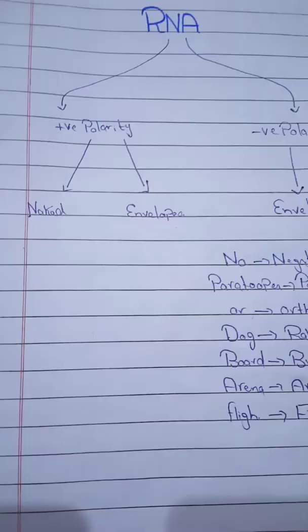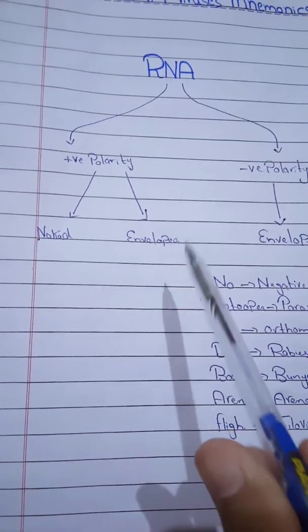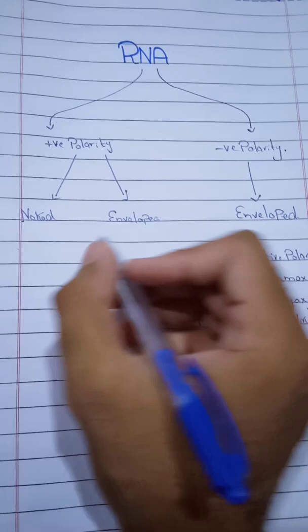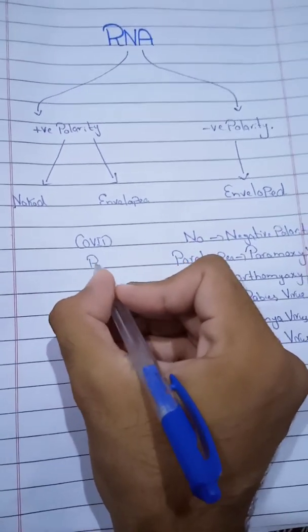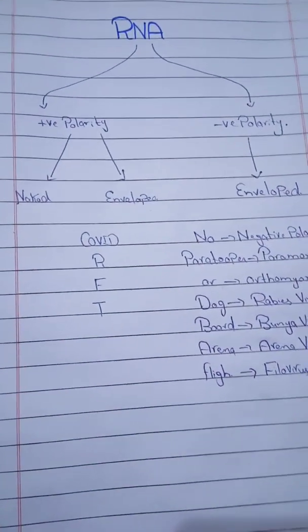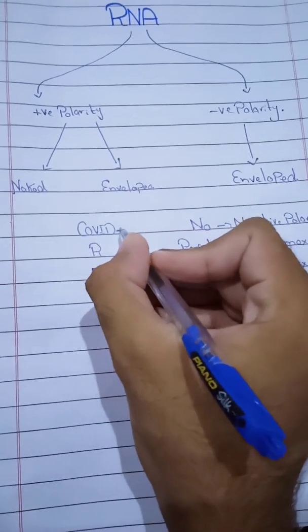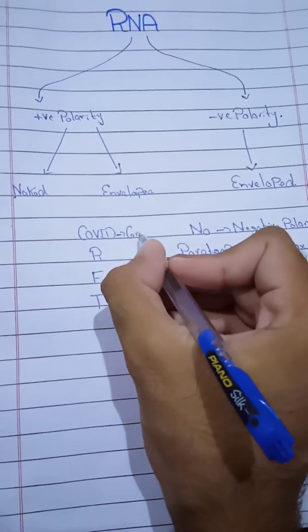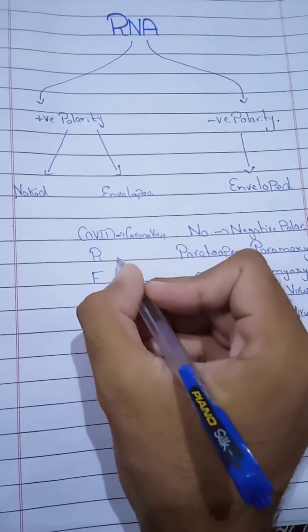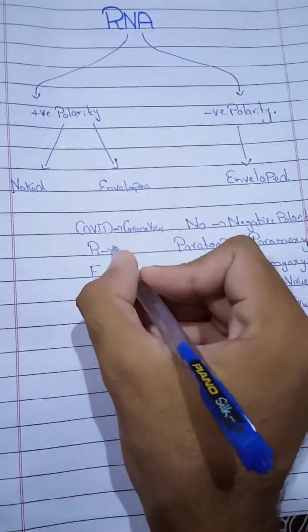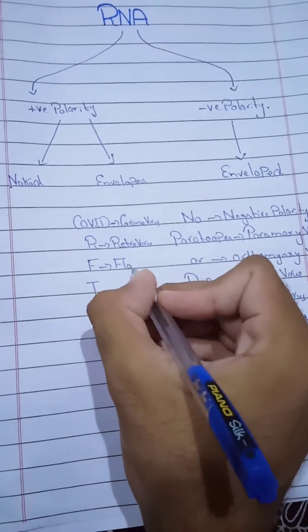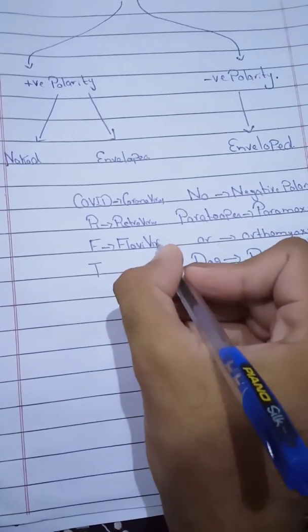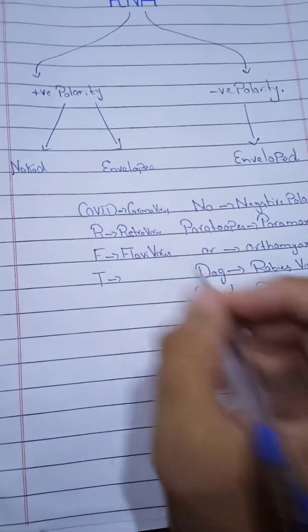Now for positive polarity viruses — they have two types: naked and enveloped. For the enveloped positive polarity viruses, remember the mnemonic 'COVID RFT.' From COVID, remember Coronavirus. From R, remember Retrovirus. From F, remember Flavivirus (F-L-A-V-I). From T, remember Togavirus.